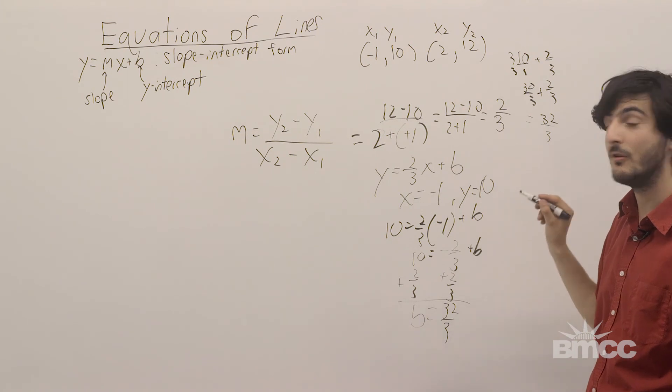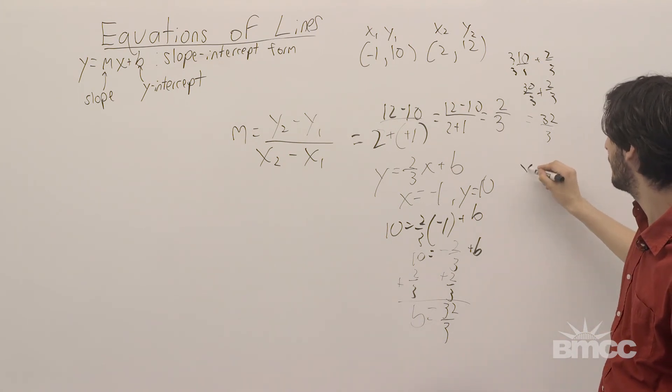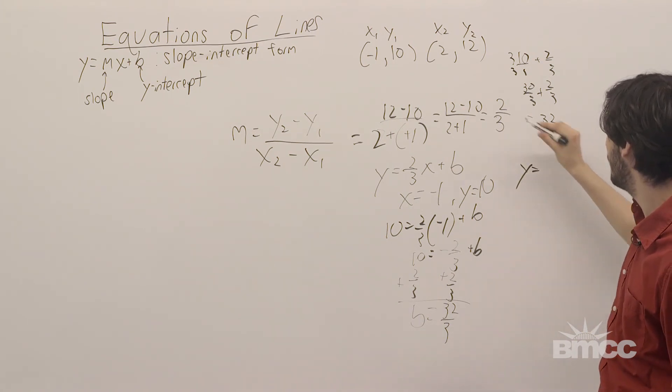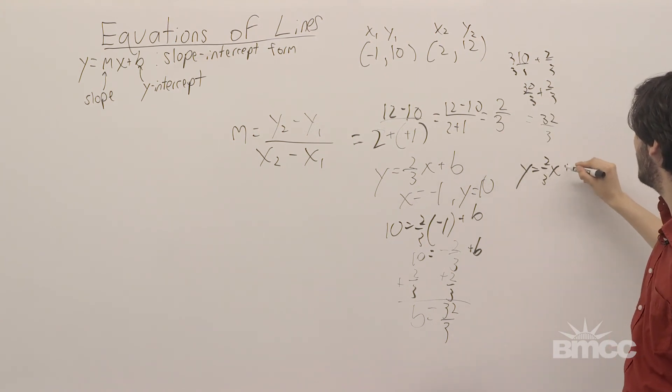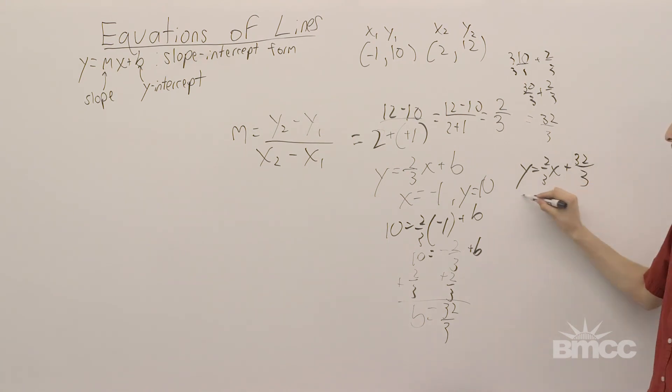Thus, since we have the slope and y-intercept, we can write this line as y equals 2 thirds x plus 32 over 3.